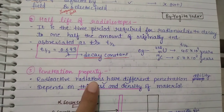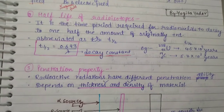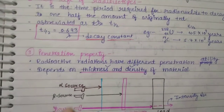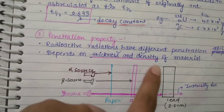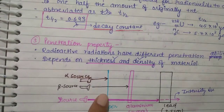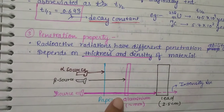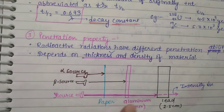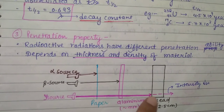Penetration property: radioactive radiation has different penetration abilities depending on the thickness and density of the material. In the diagram, the materials shown are paper, aluminum, and lead. Alpha particles are stopped by paper. Beta particles penetrate paper but are stopped by an aluminum sheet. Gamma rays penetrate both paper and aluminum but are attenuated by lead.